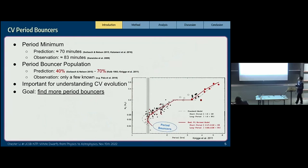The shortest system we've found so far is about 83 minutes, which is still a bit longer than the 70 minute period. Theory predicts we should have 40 to 70% of the entire CV population as period bouncers, but so far we only have a few of them. That's why it's important to find all those missing period bouncers, which would help us understand CV evolution.